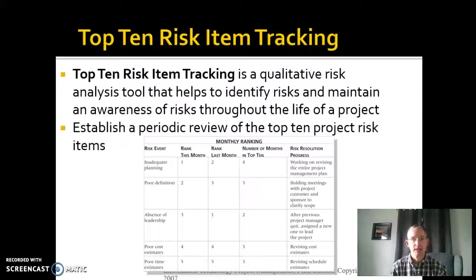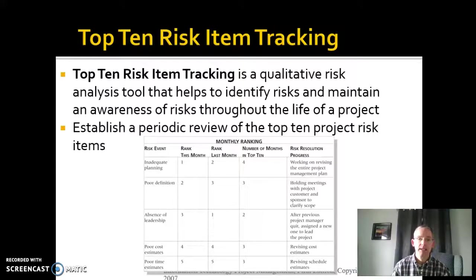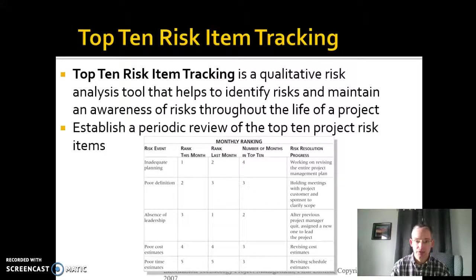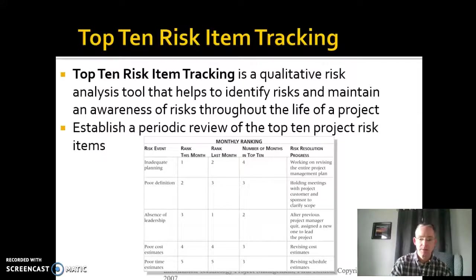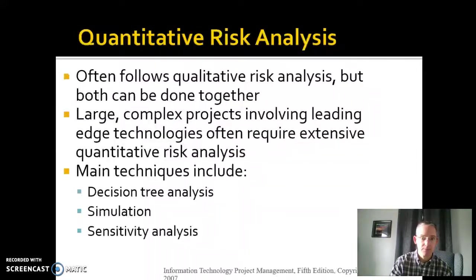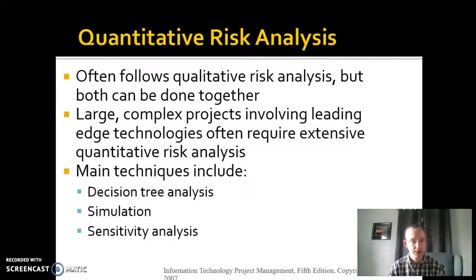That's what you use top-10 risk item tracking for — a mechanism to take your risk register and say, of all those risks, what are the key ones we're working on this week and what are we doing about them? You track each one, track the risk resolution progress. Are we making a difference and moving it to the bottom left each week? You do this periodic review of top-10 items so you're constantly aware of these risks and constantly reducing overall risk to the project.